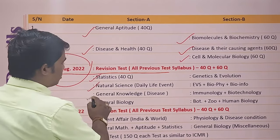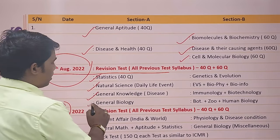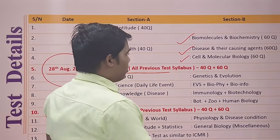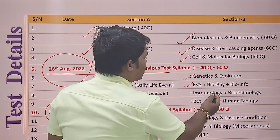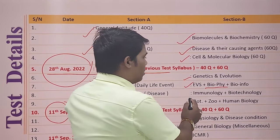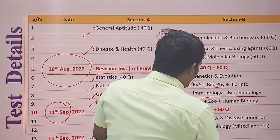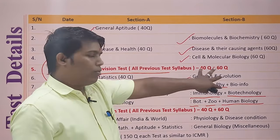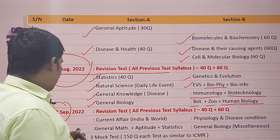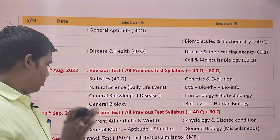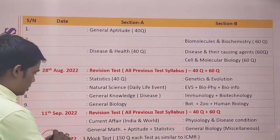For the 11th September exam, the syllabus from Section A will include Statistics, Natural Science, General Knowledge, and General Biology. For Section B, the topics will be Genetics and Evolution, EBS, Biophysics, Bioinformatics, Immunology, Biotechnology, Botany, Geology, and Human Biology.